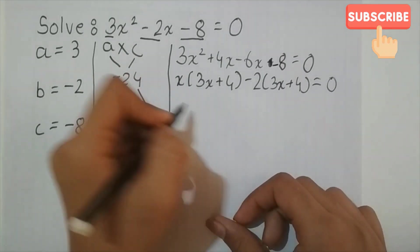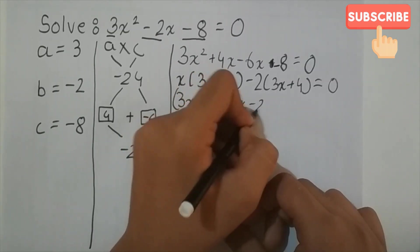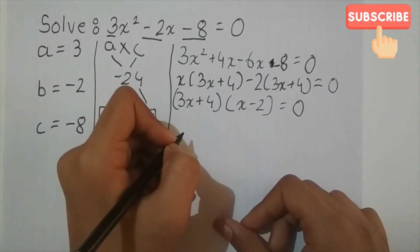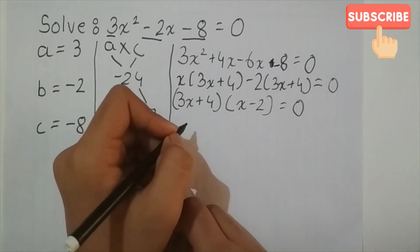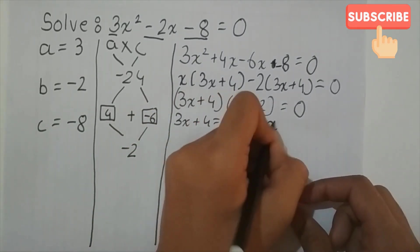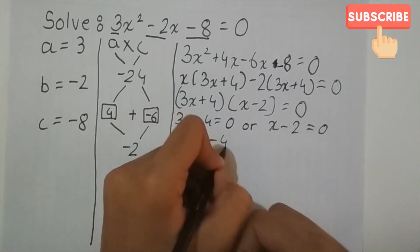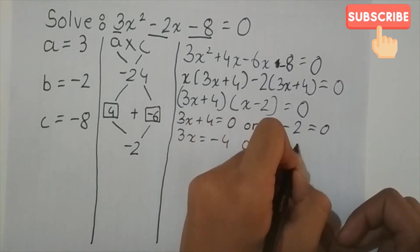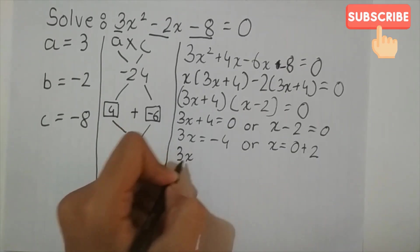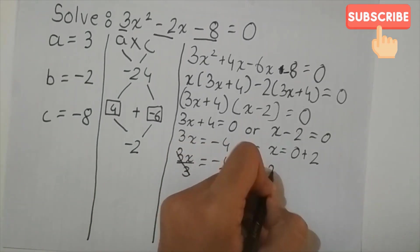So 3x plus 4 is common in this expression, so we will write like this, 3x plus 4 times x minus 2 is equal to 0. So either 3x plus 4 is equal to 0 or x minus 2 is equal to 0. So x is equal to 0 plus 2, or 3x is equal to minus 4, so x is equal to minus 4 divided by 3 or x is equal to 2.